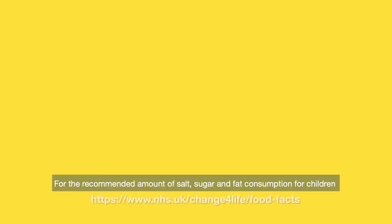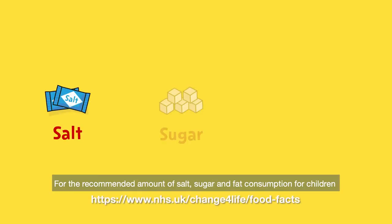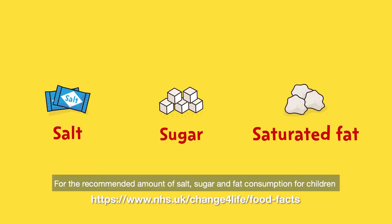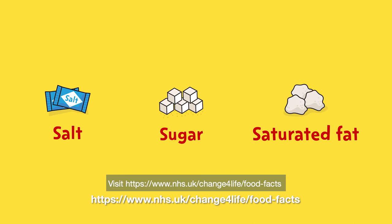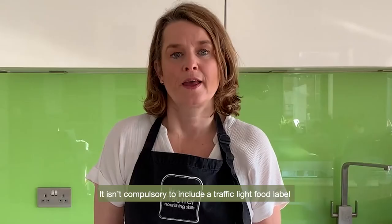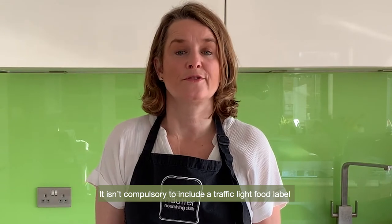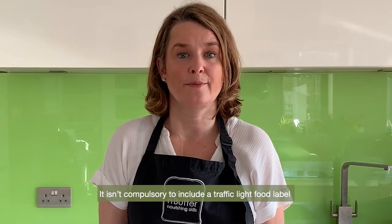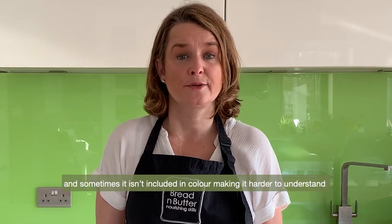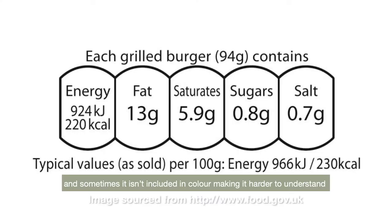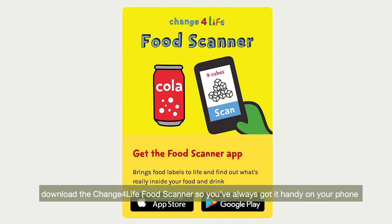For the recommended amount of salt, sugar and fat consumption for children, visit the Change for Life pages on the NHS website. It isn't compulsory to include a traffic light food label and sometimes it isn't included in colour, which makes it harder to understand. For a quick reference you can download the Change for Life Food Scanner app so you've always got it handy on your phone.